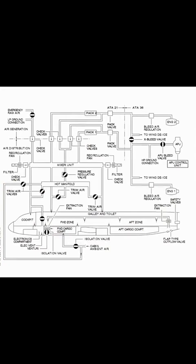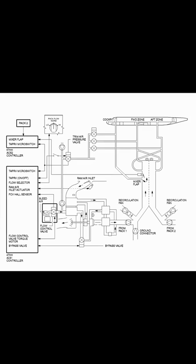The two air conditioning packs decrease the temperature and water contained within the hot bleed air coming from the engines or the pneumatic systems. Heat exchangers decrease the temperature of the air, and the air cycle machine first compresses the air and then expands it.